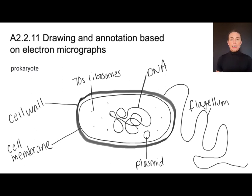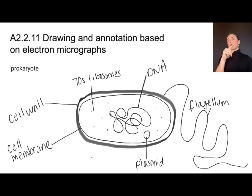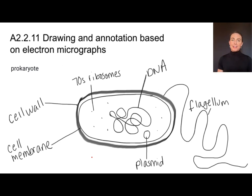I want to take a minute to note how to draw things for IB-style drawings. Notice that I'm labeling things with a clear, solid line and none of my labeling lines cross. I'm not using sketch lines — just solid lines — and my drawing is proportional.